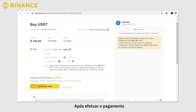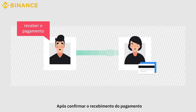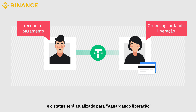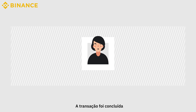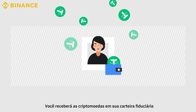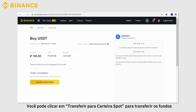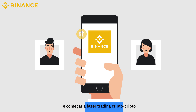Once the payment is made, click on Mark as Paid and then Confirm. The seller will release the crypto after confirming the payment is received, and the status will be updated to To Be Released. The transaction will be completed and you will find the cryptocurrencies in your fiat wallet. You can click Transfer to Spot Wallet to transfer the funds and start trading crypto to crypto.